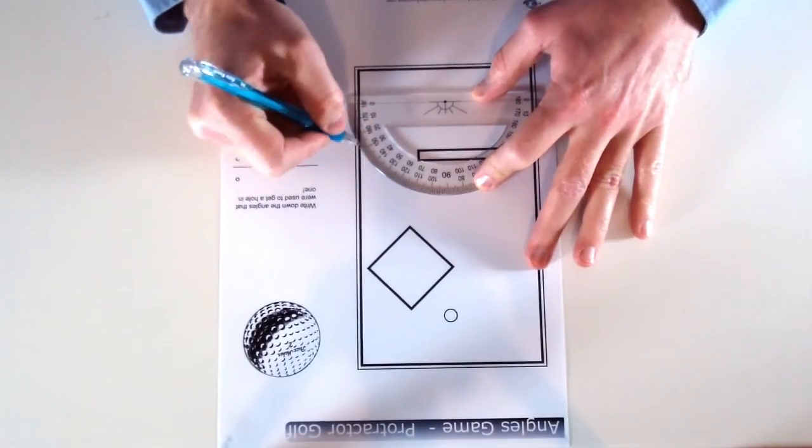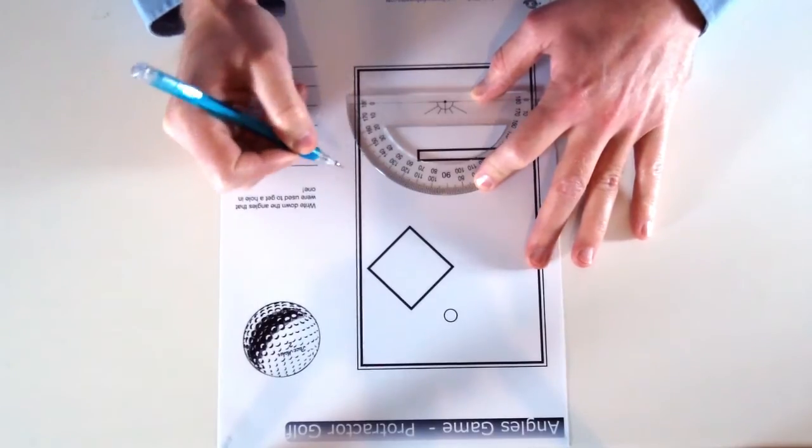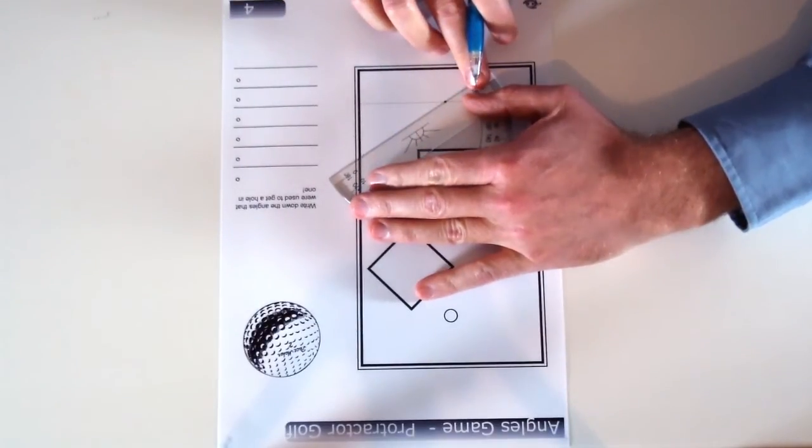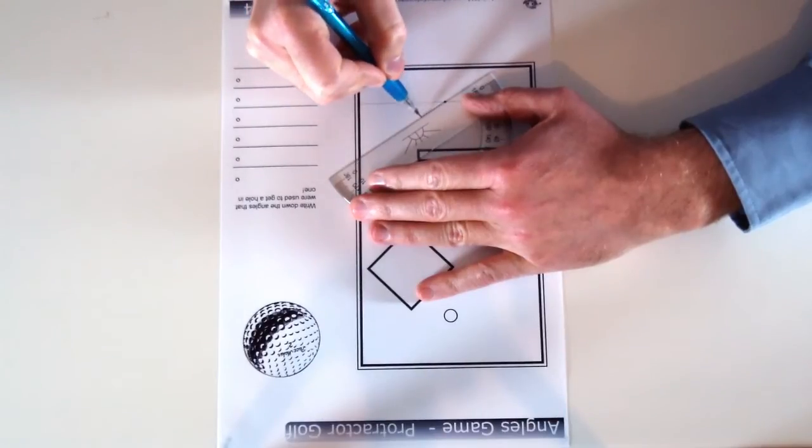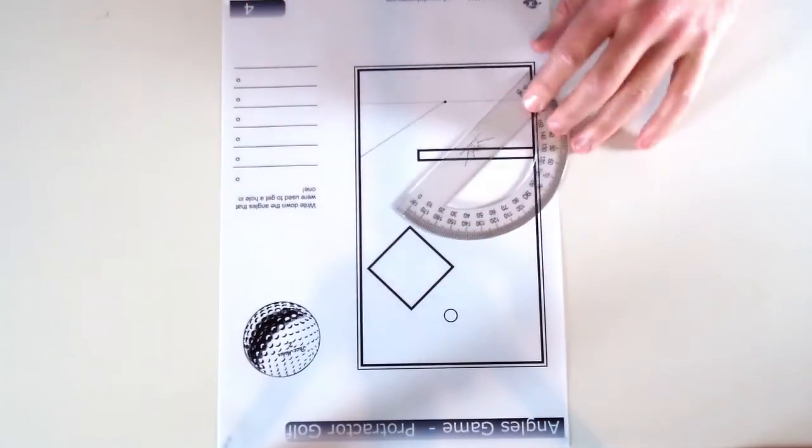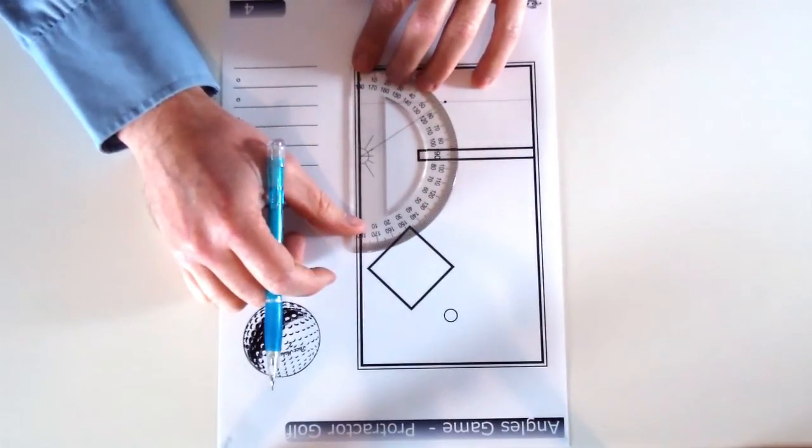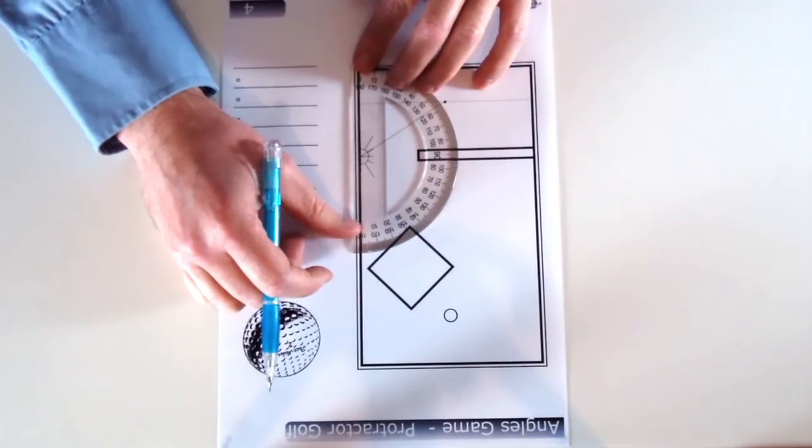I'm going to pick an angle of 33 degrees. Draw a line from the starting point 33 degrees in this direction. All right, so I've hit a wall. Now I need to put the protractor down there so I can figure out which angle it's going to bounce off of.